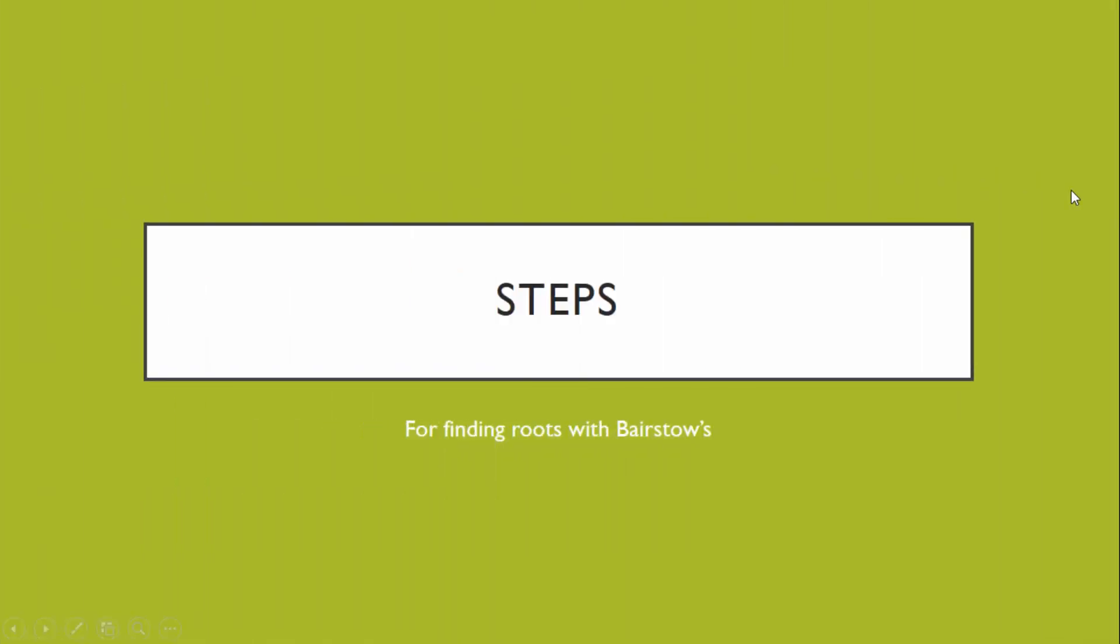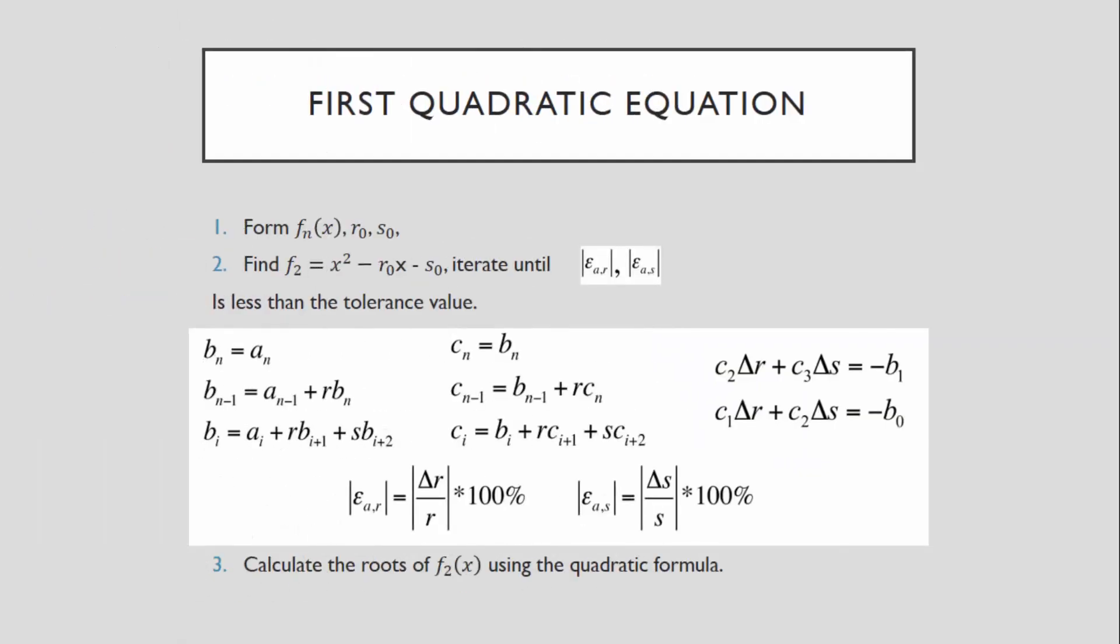These are the steps for finding roots with Bairstow's method. For the first quadratic equation, we will find the function of x, which is the original equation, r0, which is the initial guess of r, and s0, which is the initial guess of s. Then, we will try to find f2. This equation is a bit complex to find and overall it's very time consuming. It will be done using these equations, which I will explain on a later part of this video. And after that, you will calculate the roots of f2 of x using the quadratic formula.